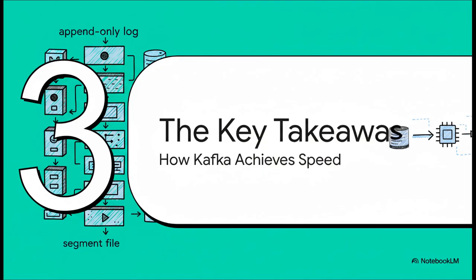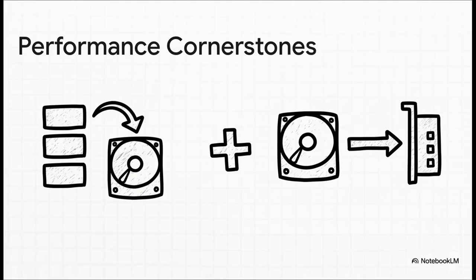So, let's bring this all home. We started out asking that big question. Why is Kafka so fast? And now we've got the answer. It's not one single trick. It's a combination of two profoundly clever design choices working together. These really are the two cornerstones of Kafka's performance.